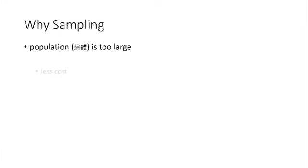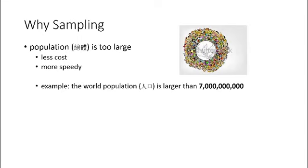An obvious one is that the population is always too large. Sampling can reduce cost and is more speedy when data is needed urgently. For example, as we know, the world population is larger than 7 billion today. It is almost impossible to know the monthly income of every person in the world. Such a survey will consume too much money, human resources, and time.